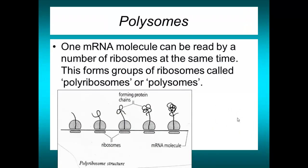One final point on translation: you don't need just one ribosome on an mRNA molecule — you might have many ribosomes on the same mRNA molecule simultaneously. The ribosome that has been on it longest is closest to the stop codon and nearly finished synthesizing its polypeptide chain, while the most recently bound ribosome is just beginning. All ribosomes move in the same direction and produce exactly the same protein. These are called polyribosomes — sometimes shortened to polysomes.